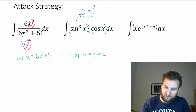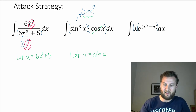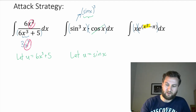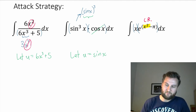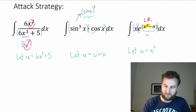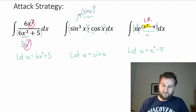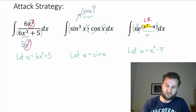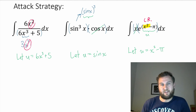For the third preview example I have x times e to the x squared minus pi. It's not a regular e to the x — it's e to the power of x² − π, so I might run into a chain rule issue with that exponent. What I can do is take that exponent as my substitution: let u equal x squared minus pi. When I differentiate I get 2x, and that 2x might cancel with the x out front. So that will be my strategy, and in the next session we'll solve all three by substitution.